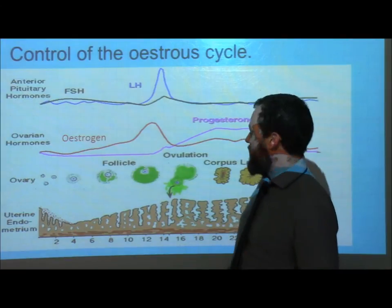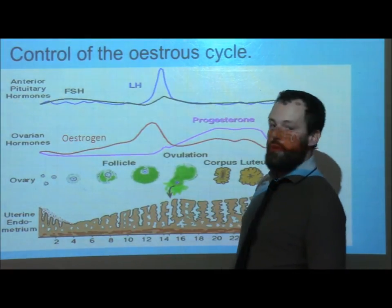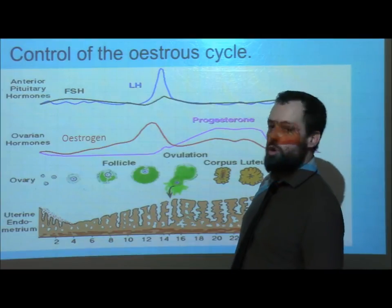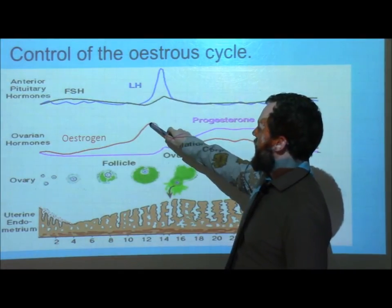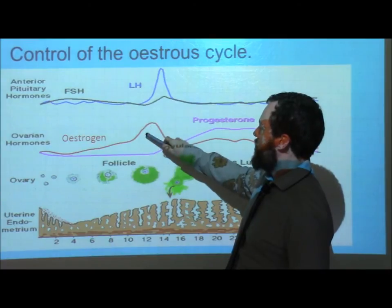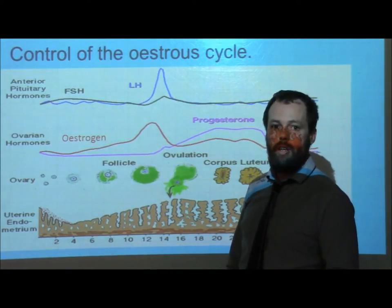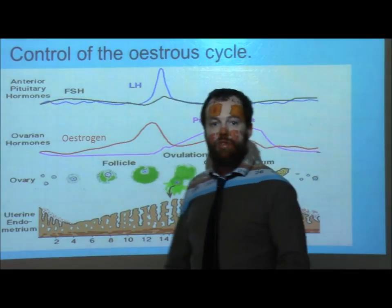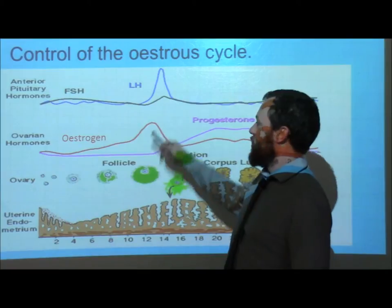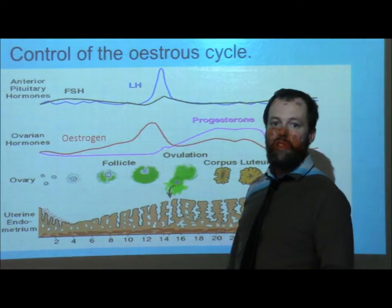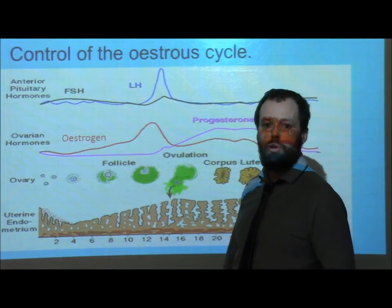As well as causing the uterus lining to start to thicken, oestrogen also causes the production of the hormone LH. We can see that as we have this high level of oestrogen, it causes a high level of LH. This is known as a positive feedback loop, because the LH causes a greater secretion of oestrogen, and therefore causes a greater secretion of LH, and so on.